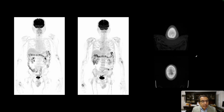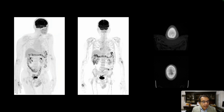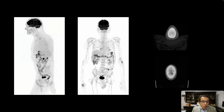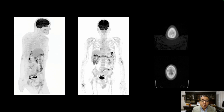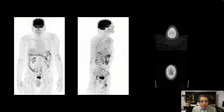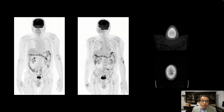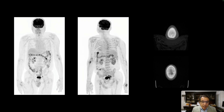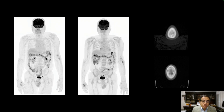Here is our next patient. They have a history of known multiple myeloma. Their prior PET-CT, the leftmost rotating image, was reported as negative — no hypermetabolic bone lesions or soft tissue lesions. They presented for follow-up because blood tests suggested multiple myeloma recurrence. On this FDG PET-CT study, compared to the prior, there is subtle mild increased uptake in the axial skeleton, and biopsy confirmed recurrent myeloma.